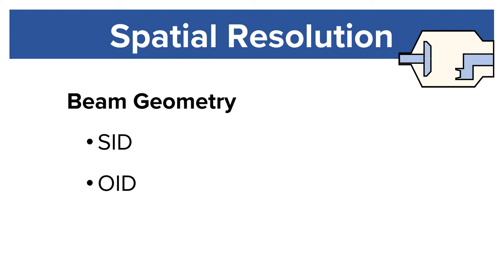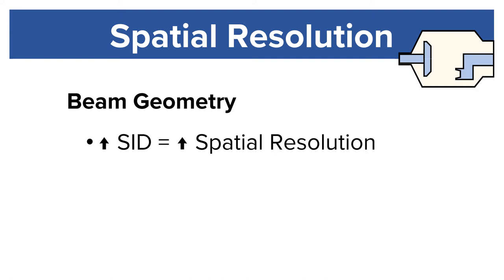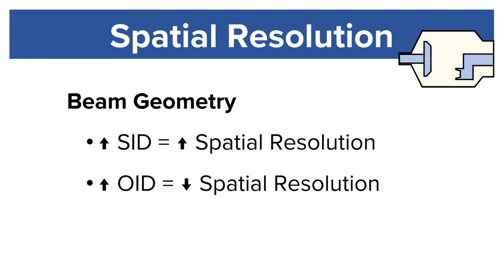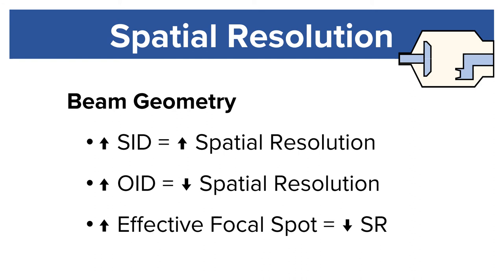Increasing SID increases spatial resolution because it decreases penumbra. Increasing OID decreases spatial resolution because it increases penumbra. Increasing the effective focal spot decreases spatial resolution because it increases penumbra.